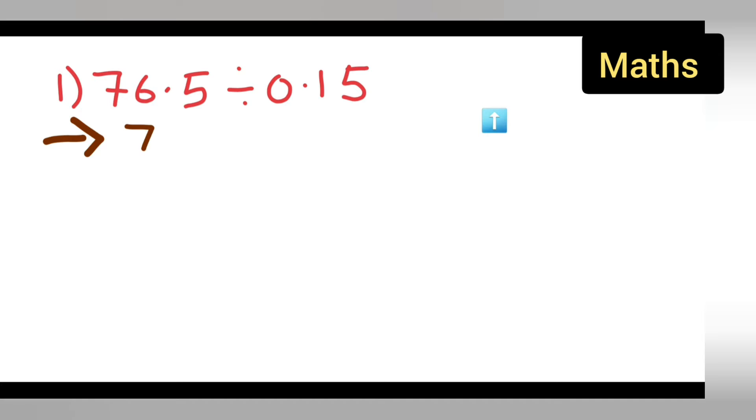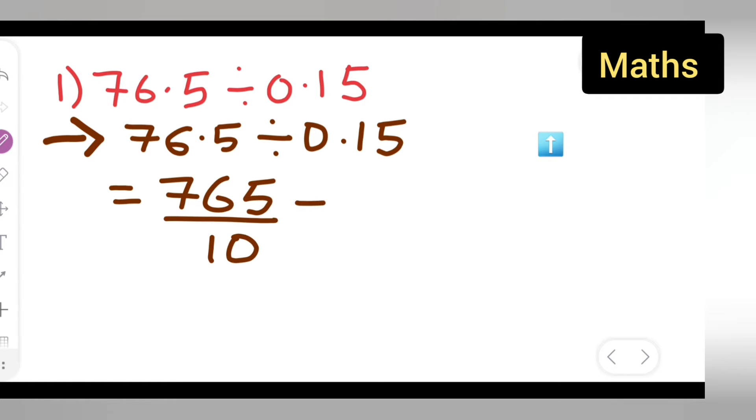First, write down 76.5 divide by 0.15. I'll give you all the step-wise order. What we need to do is remove the decimal point. It is in the tenth place, so directly write down 765 upon 10 divide by 15 upon 100, because this is a place of 10, 100. Two zeros will come down.